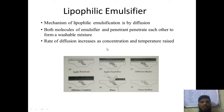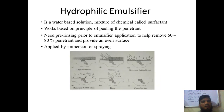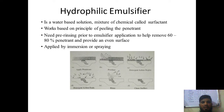The rate of diffusion increases when concentration and temperature rise. If diffusion normally takes 5 minutes, increasing the temperature will reduce the time. The second type is hydrophilic emulsifier — it is a water-based solution mixture of chemicals called surfactants. It works on the principle of displacement of the penetrant and requires pre-rinsing prior to emulsifier application to remove 60–80% of the penetrant and provide an even surface.